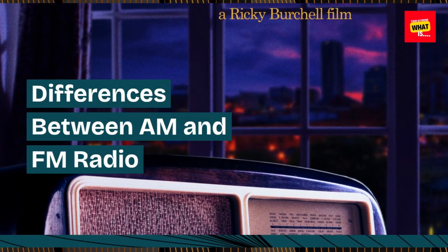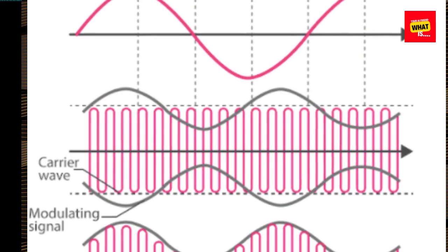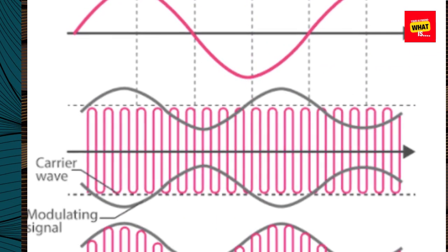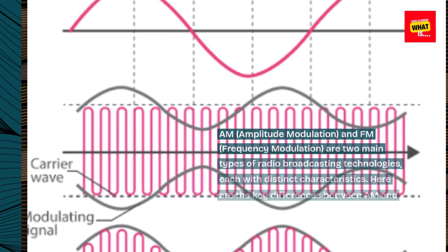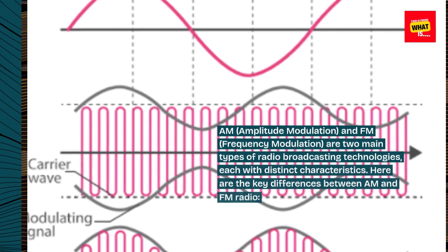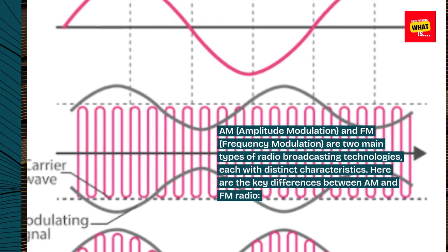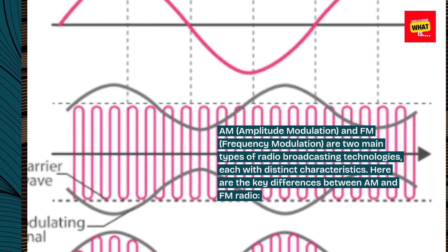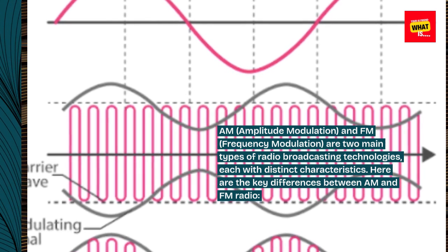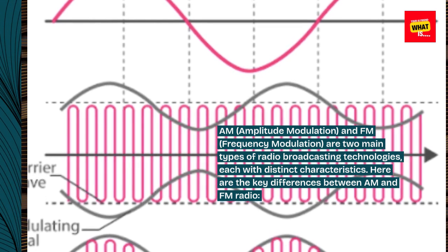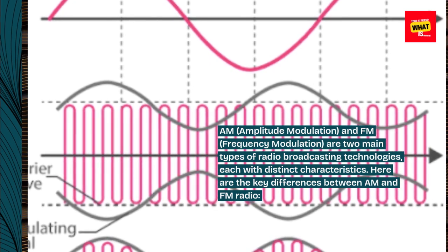Differences between AM and FM radio. AM, amplitude modulation, and FM, frequency modulation, are two main types of radio broadcasting technologies, each with distinct characteristics. Here are the key differences between AM and FM radio.